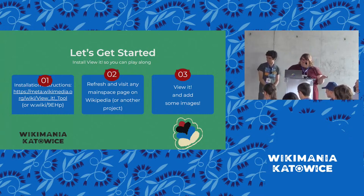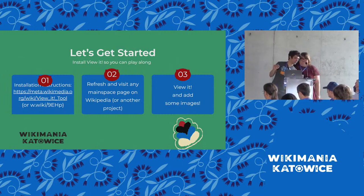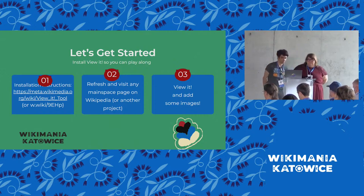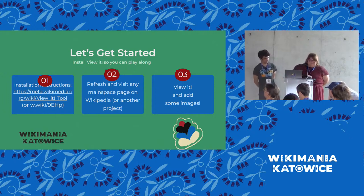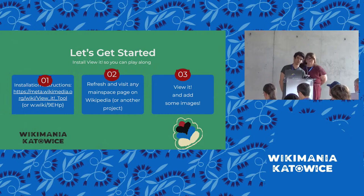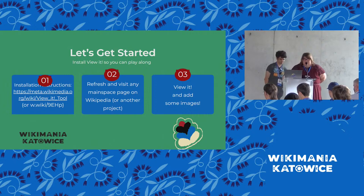We'll slow down and leave this up for a moment so everyone can follow the link. The short link, if you want to access it, is w.wiki slash nine capital E capital H lowercase p — that should take you straight to the Meta page. And on the Meta page, you'll see instructions to install both ViewIt light and ViewIt full. ViewIt full is usually what you want to install if you want the full experience, and that's what you'll see today as we go through this.